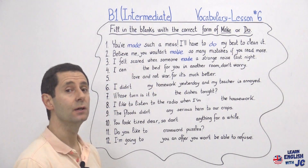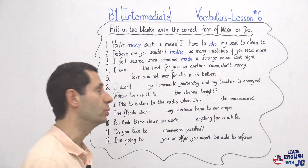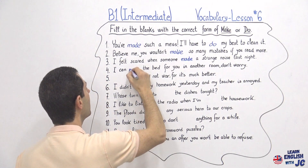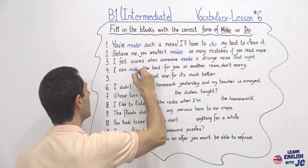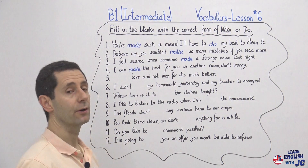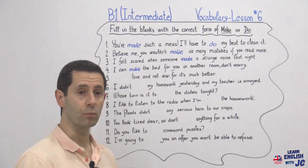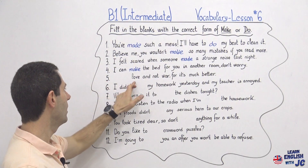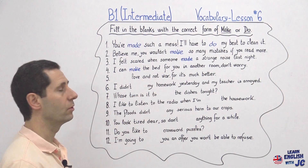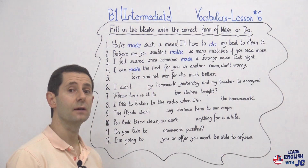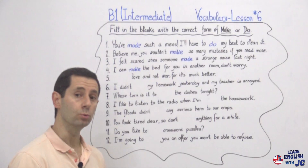Number four: 'I can make the bed for you in another room, don't worry.' With 'the bed,' you use make — 'I can make the bed.' Number five: 'Make love and not war' — with 'love' you use make. 'Make love and not war — it's much better!'